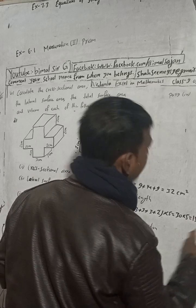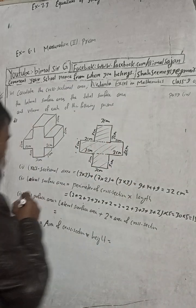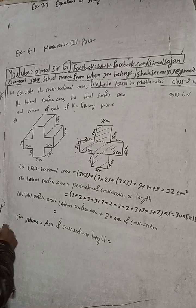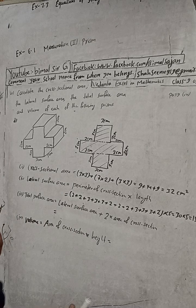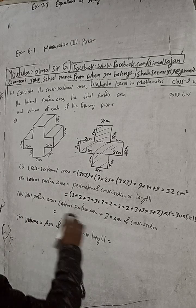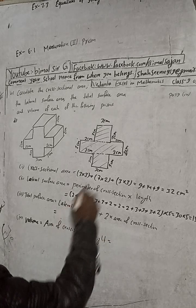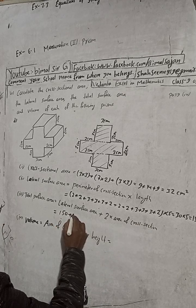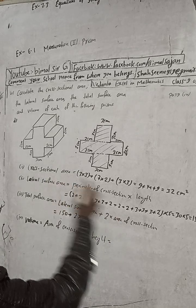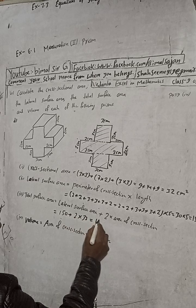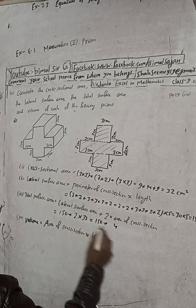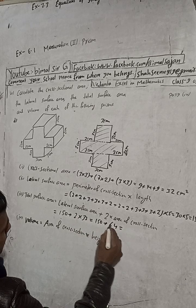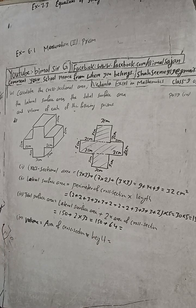Now we find the total surface area. The total surface area formula is: lateral surface area + 2 × area of cross section. We already calculated the lateral surface area as 150, and the area of cross section as 32. So total surface area = 150 + 2 × 32 = 150 + 64 = 214 cm². This answer of 214 is correct.